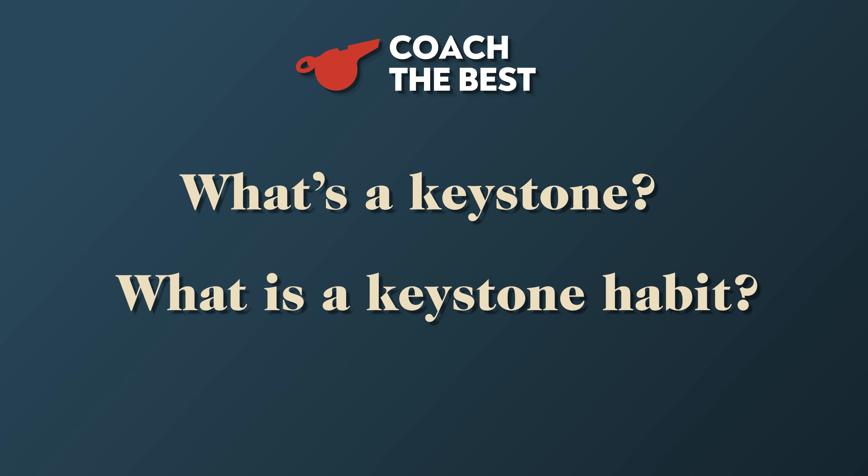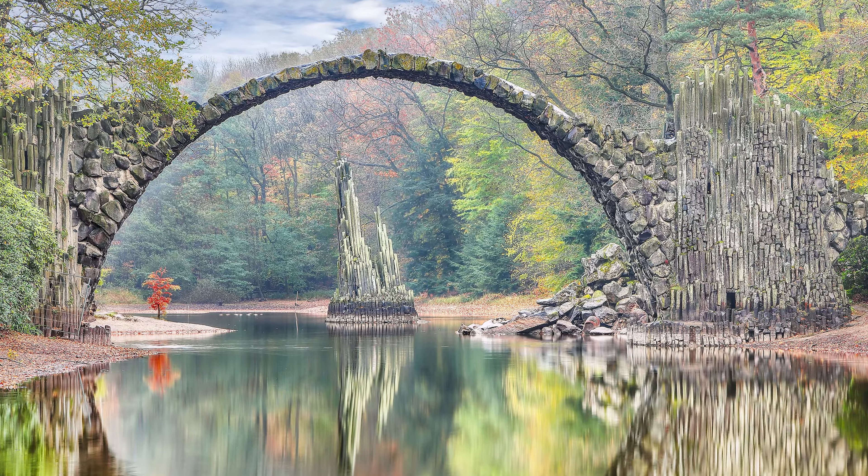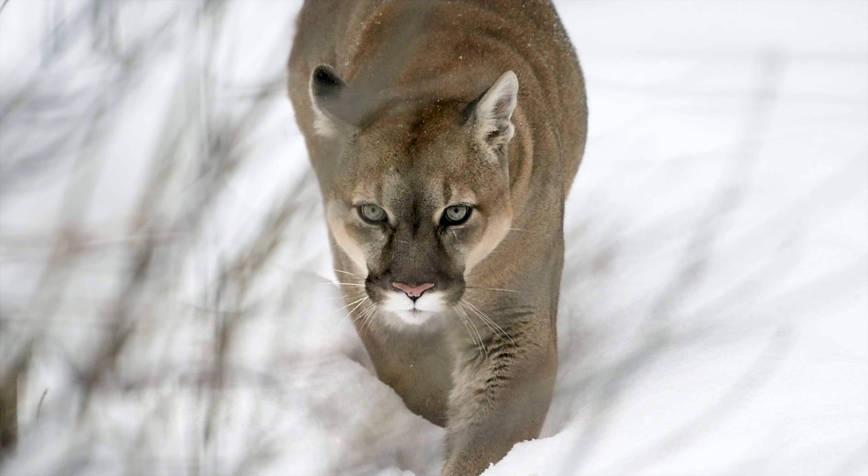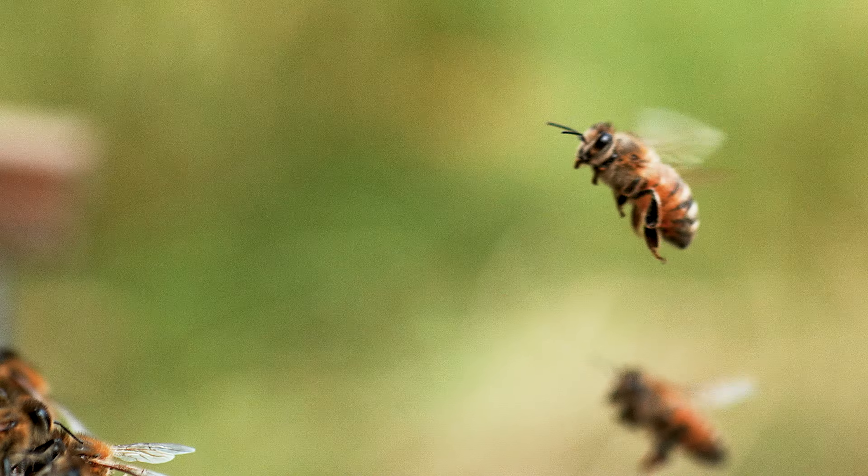You might wonder, what's a keystone, and what is a keystone habit? In architecture, a keystone is a wedge-shaped stone that stabilizes an entire archway. In a figurative sense, a keystone is something that holds a process or system together, something on which everything else depends — just like a keystone species in nature has a significant impact on its ecosystem. The removal of a keystone can lead to a cascade of negative consequences.